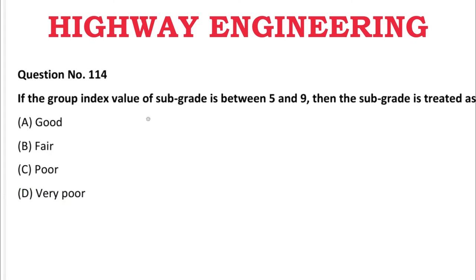Next question: If the group index value of subgrade is between 5 and 9, then the subgrade is treated as — A: good, B: fair, C: poor, D: very poor. The correct answer is C, poor.